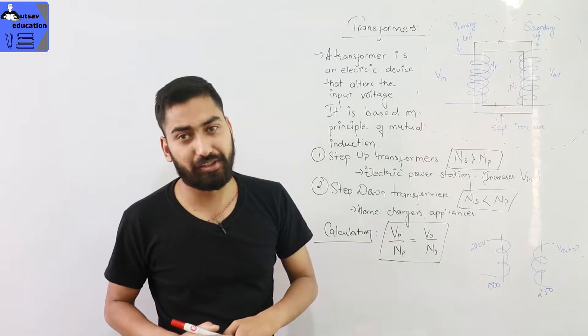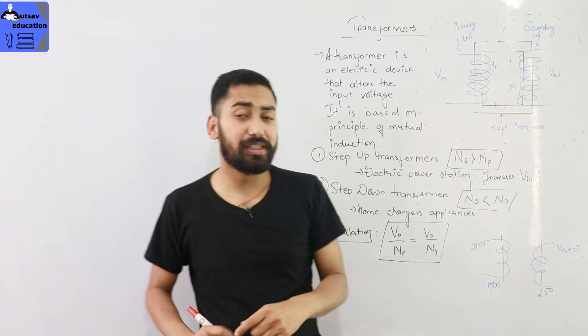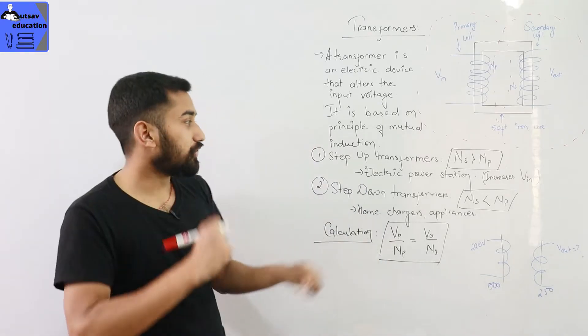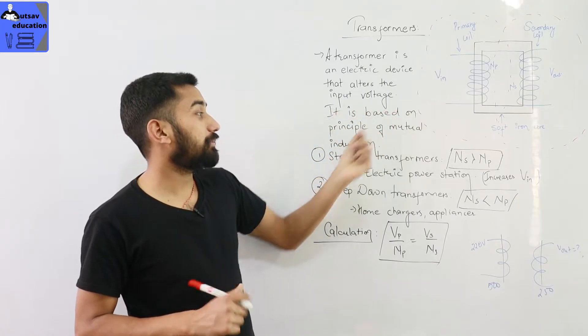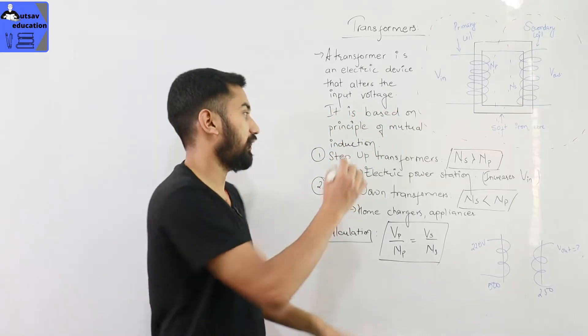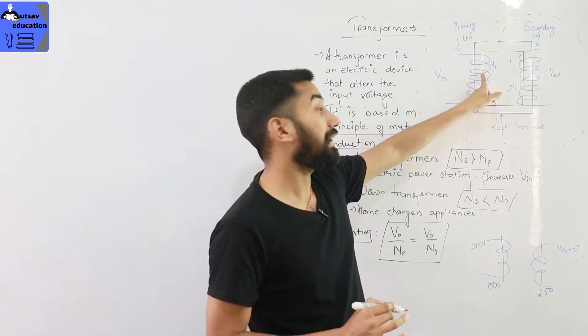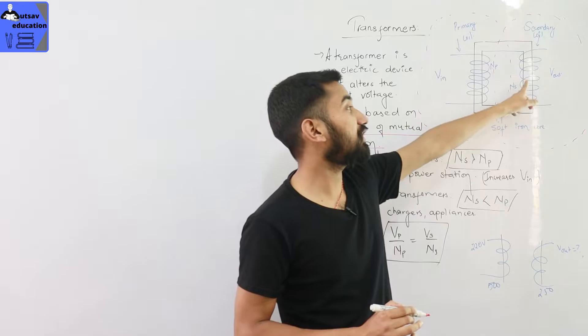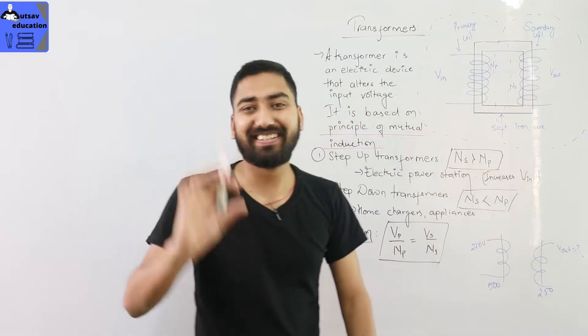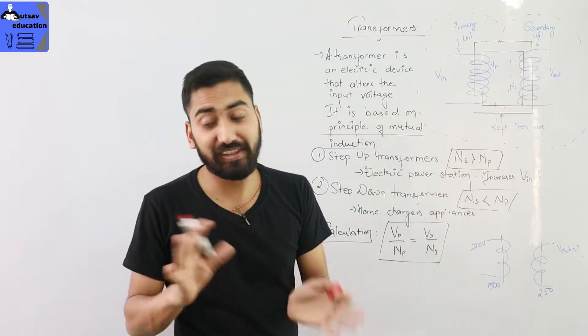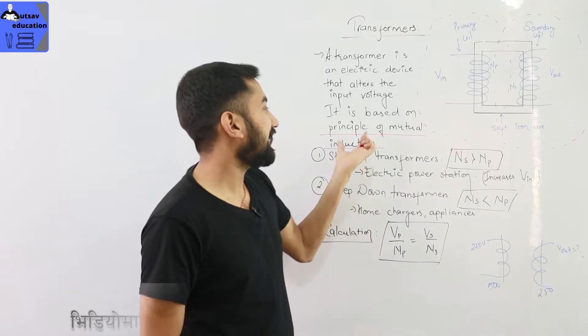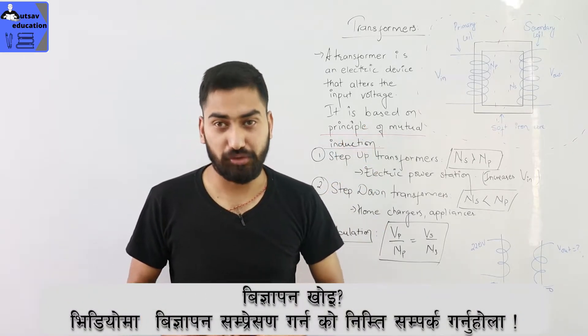Mutual induction is based on the important question. On which principle is the transformer based on? It is based on principle of mutual induction. So transformers are based on principle of mutual induction. So what do we do? Magnetic field is induced. These magnetic fields are related. What do we do? Electric EMF induced. So mutually induced. So this is the principle of mutual induction.